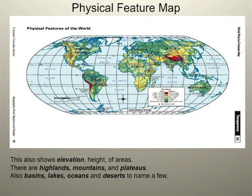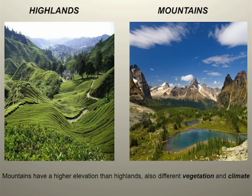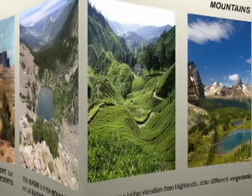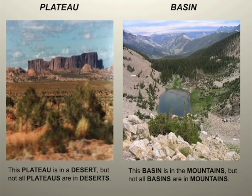This map also shows you highlands, mountains, lakes, oceans, plateaus, and basins, to name a few physical features. Here is an example of two different types of landforms. On your left you have highlands, and on the right you have mountains. On your left is a plateau, and on your right is a basin. There are many more physical features to choose from, but these are just a few examples.